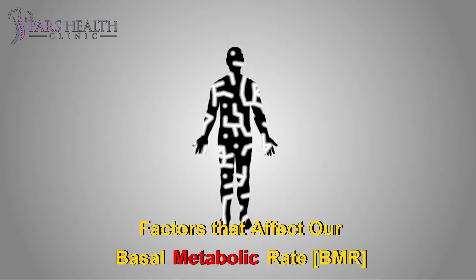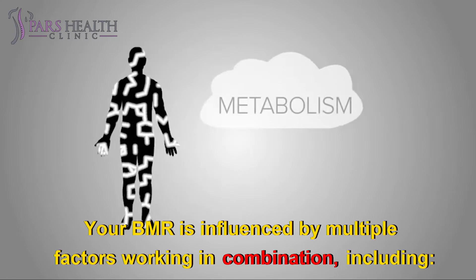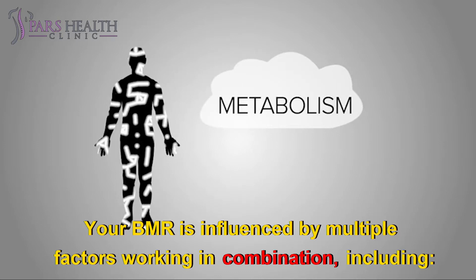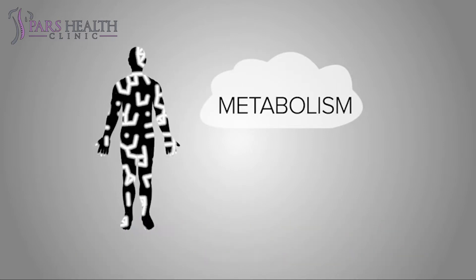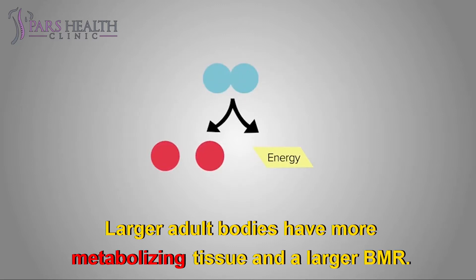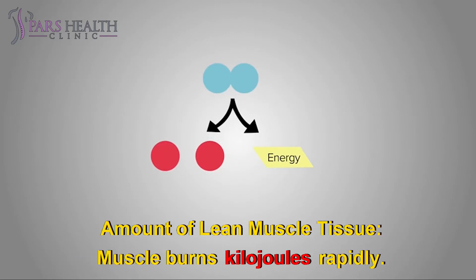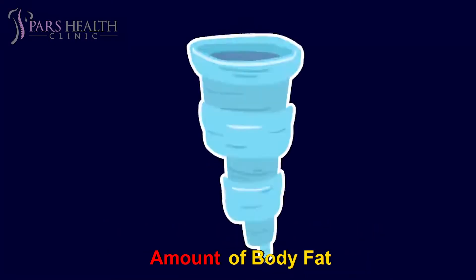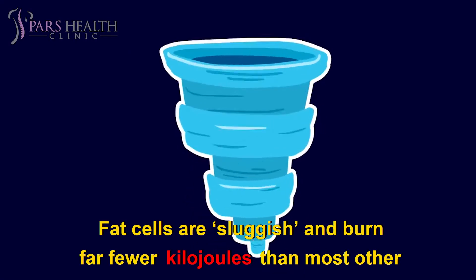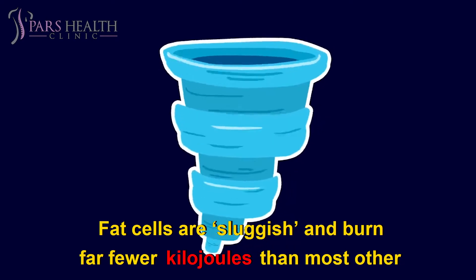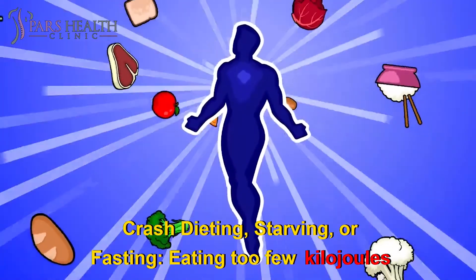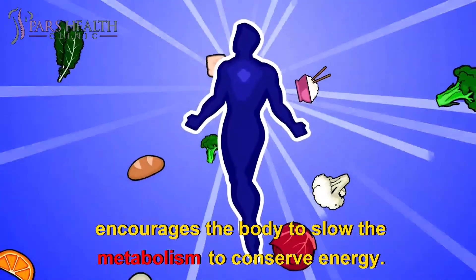Factors that affect our basal metabolic rate, BMR. Your BMR is influenced by multiple factors working in combination, including body size — larger adult bodies have more metabolizing tissue and a larger BMR. The amount of lean muscle tissue — muscle burns kilojoules rapidly. The amount of body fat — fat cells are sluggish and burn far fewer kilojoules than most other tissues and organs of the body.